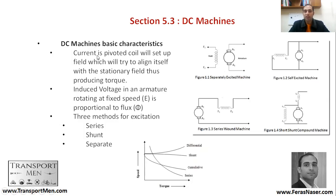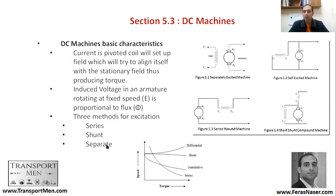The mechanism: current in a pivoted coil sets up a magnetic field, which tries to align itself with a stationary field, thus producing torque and resulting in rotational movement. The induced voltage is in the armature — rotating at fixed speed, voltage E is proportional to flux. You need to look at this in more details. The three methods of excitation are series, shunt, and separate or self-excited.